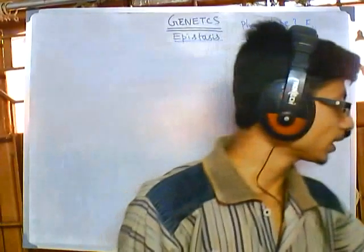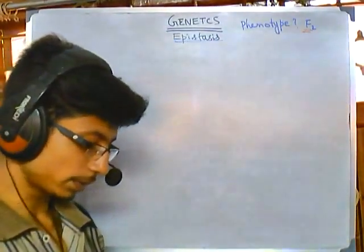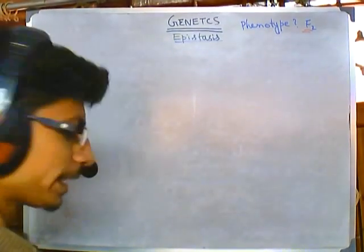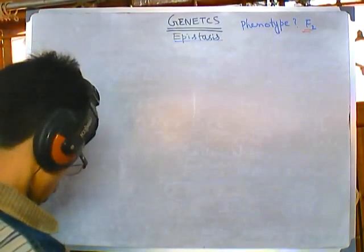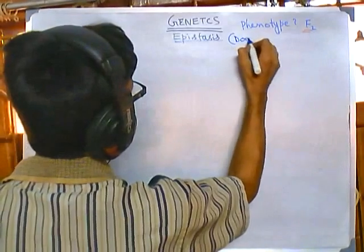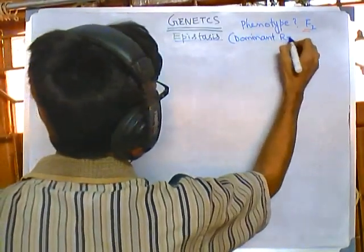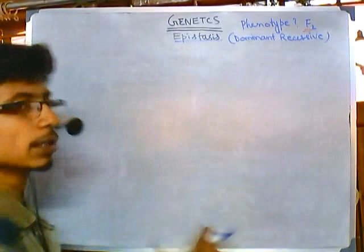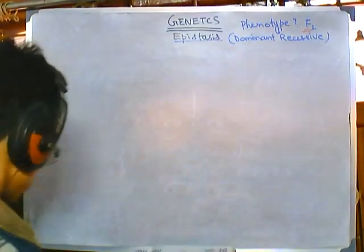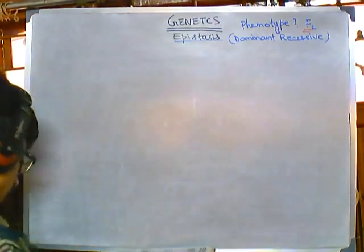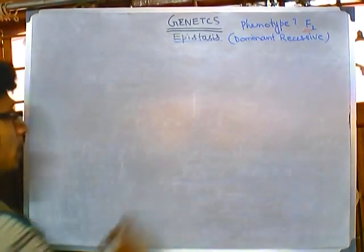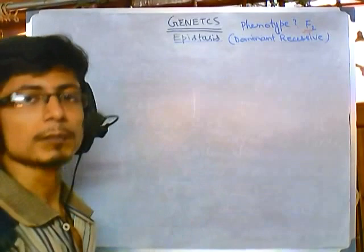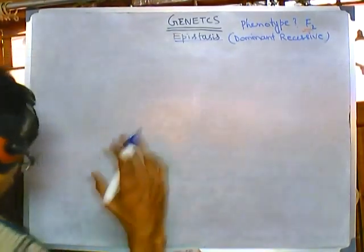Now let us look at another problem of epistasis. We have solved two problems of epistasis. Now let's talk about the dominant recessive epistasis. Dominant recessive epistasis means two genes will be there — one will be dominant and one will be recessive — and both of them will be epistatic.